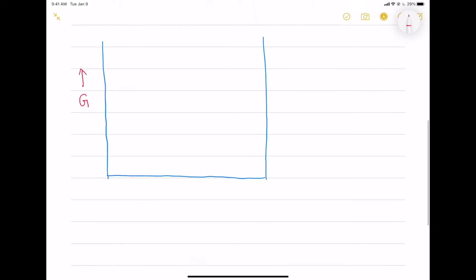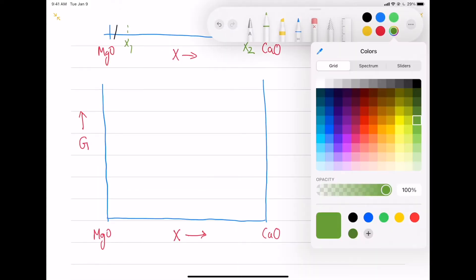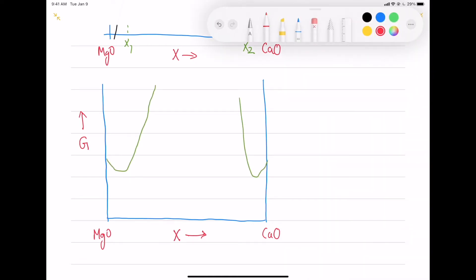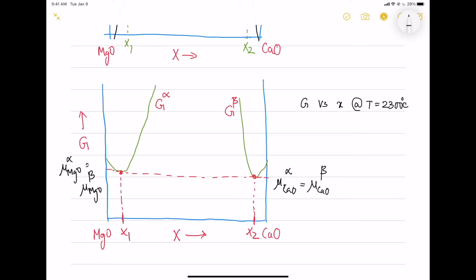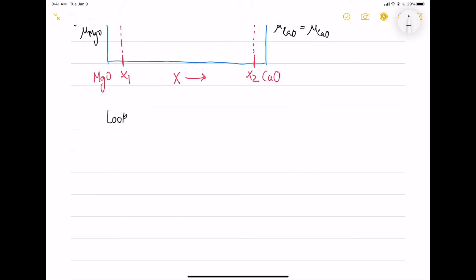If you draw the G versus X curve at 2300 degree Celsius and take a common tangent, you have X1 and X2, G alpha and G beta. You know that for a common tangent, the chemical potential at alpha and beta phases for each component, MgO and CaO, should be equal. Look into pages 339 and 340 in GASKELL textbook to get clarity of this equality of chemical potential.